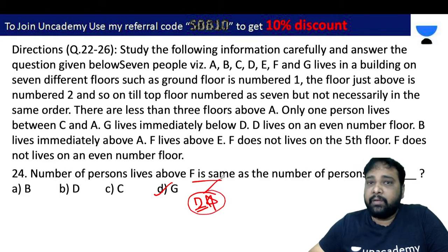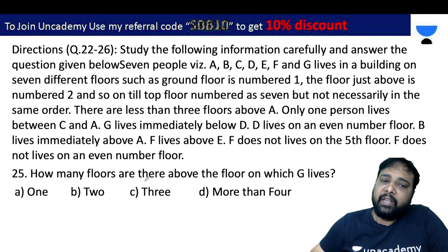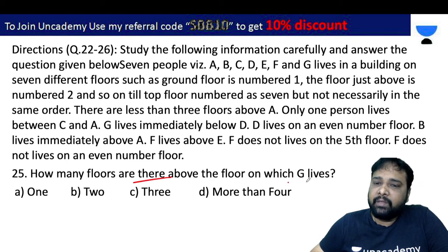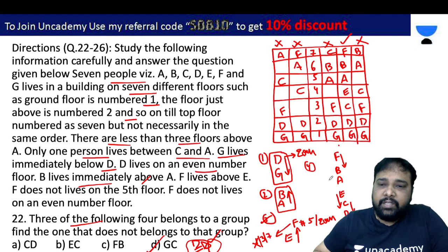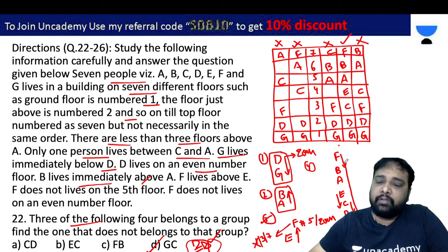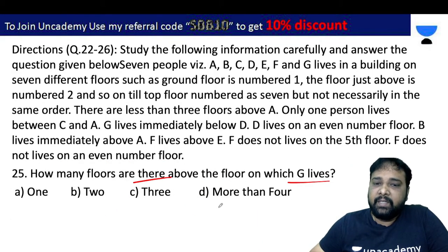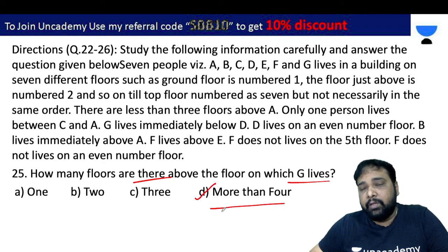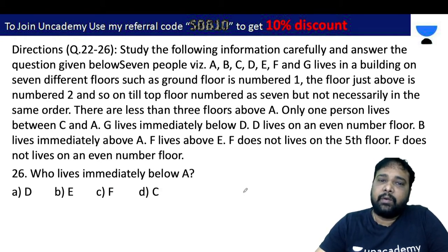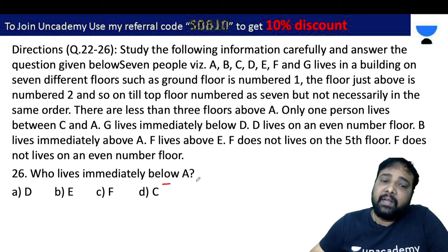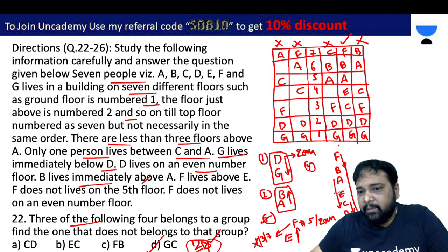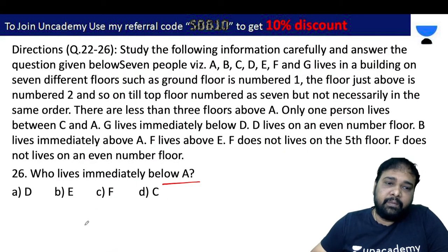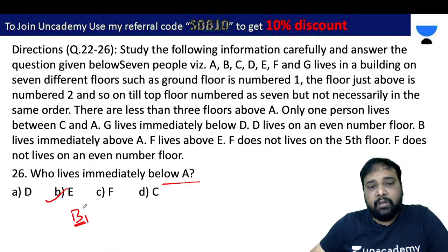The floor on which G lives: G is on floor 6. The answer is 6, which is more than 4. The answer is D. Who lives immediately below A? Almost 80 percent of the arrangement confirms the answer is B. The second option only is the right answer.